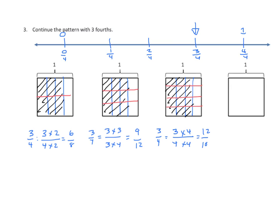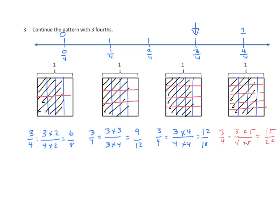Last but not least, we'll partition it five ways — 1, 2, 3 vertical lines — shading 3 of those. Now we're going to partition it into five parts using four horizontal lines. We have 3 fourths equals 3 fourths times 5 over 5 equals 15 twentieths. If we count, we have 4 columns with 5 in each column, making 20 parts in all, and of those, 15 are shaded.